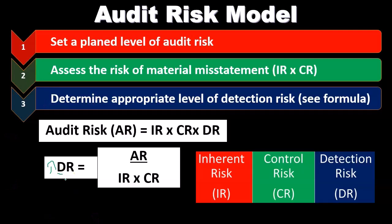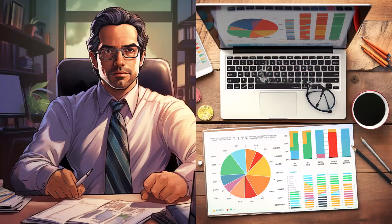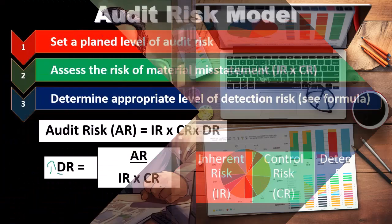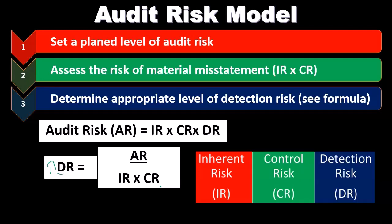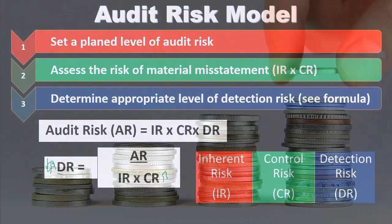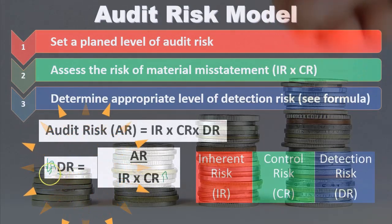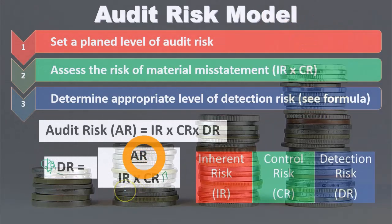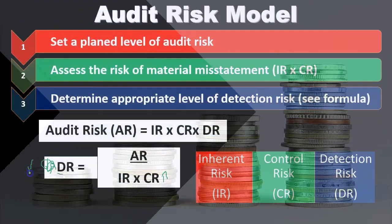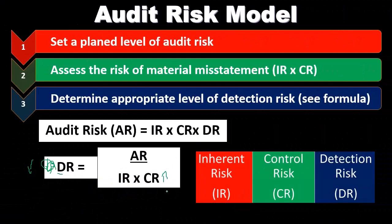With large publicly traded companies, we depend to some degree on internal controls. With smaller companies, we expect internal controls to be less effective, so control risk is higher. If control risk or inherent risk is higher, we have to set our detection risk lower, which means we would do more substantive testing. So think through the equation: high inherent and control risk leads to low detection risk and more testing; low risk leads to higher detection risk and less testing.